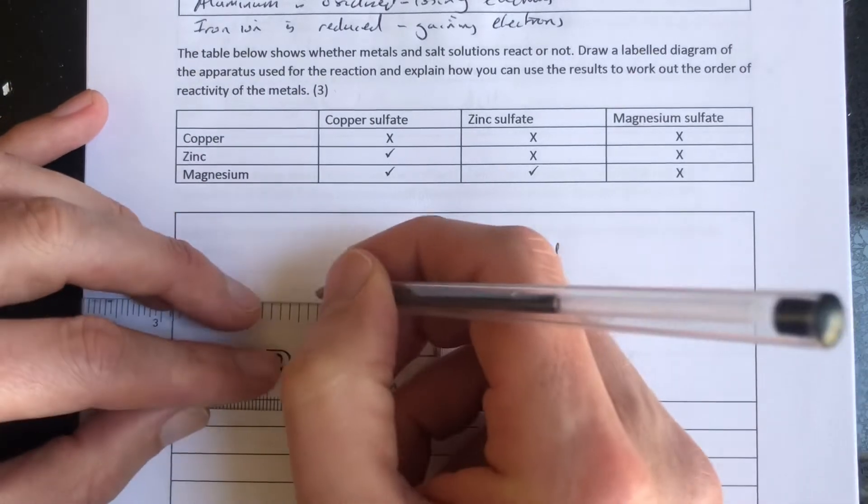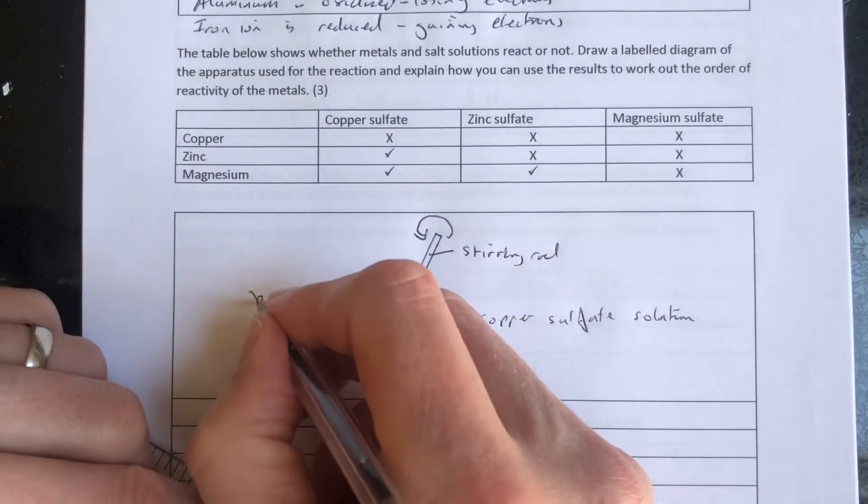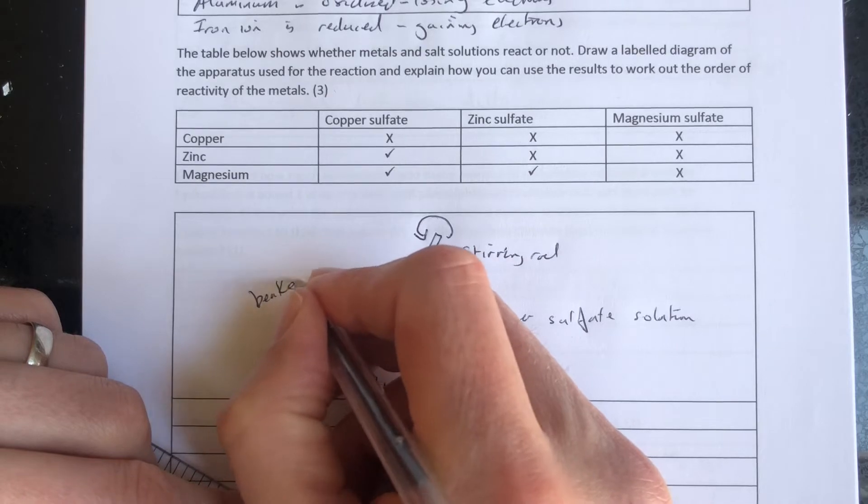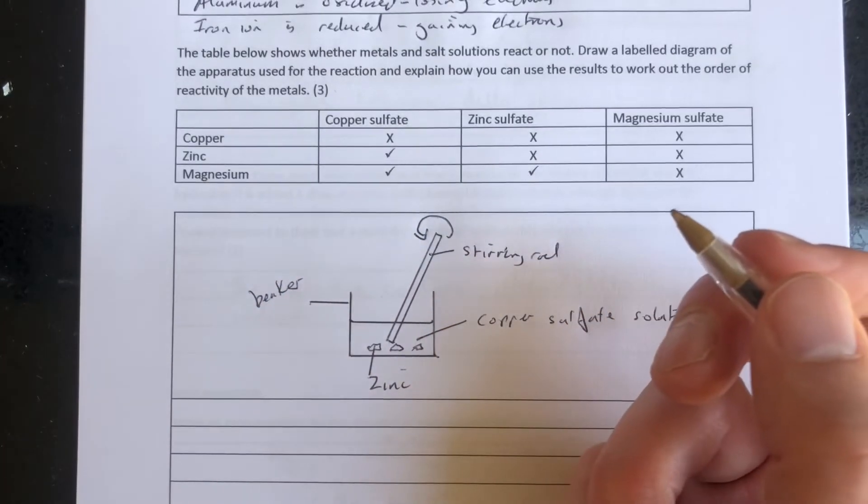We need to label this as a beaker. We can always ask for a label diagram. If it asks for a label diagram, we can give it a label diagram. There's no such thing as too simple.